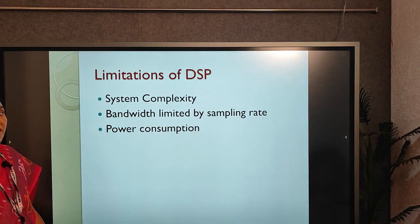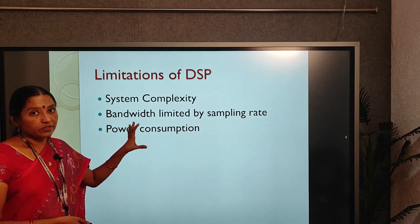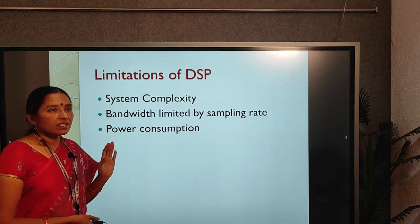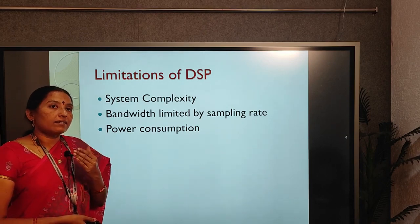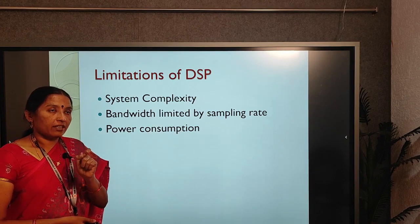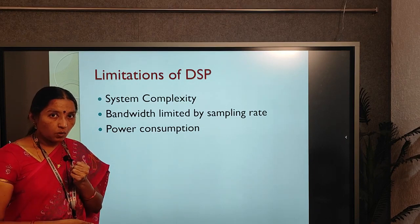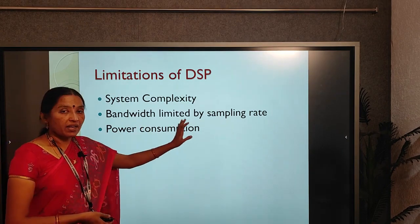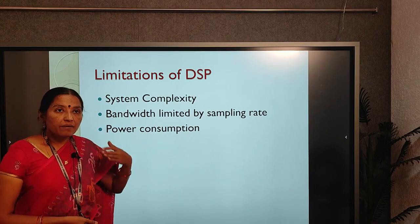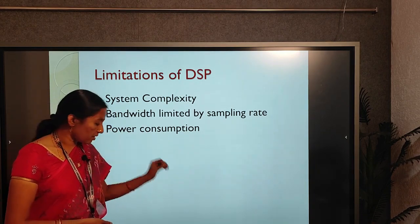Limitations of DSP: First is system complexity — A-to-D and D-to-A converters are required, increasing system complexity. Second is bandwidth limited by sampling rate: to reconstruct the original signal from the sampled signal, the sampling frequency must be greater than or equal to 2F_M (Nyquist condition), limiting the bandwidth. Third, power consumption is also high because thousands of transistors are used in the digital signal processor chip.